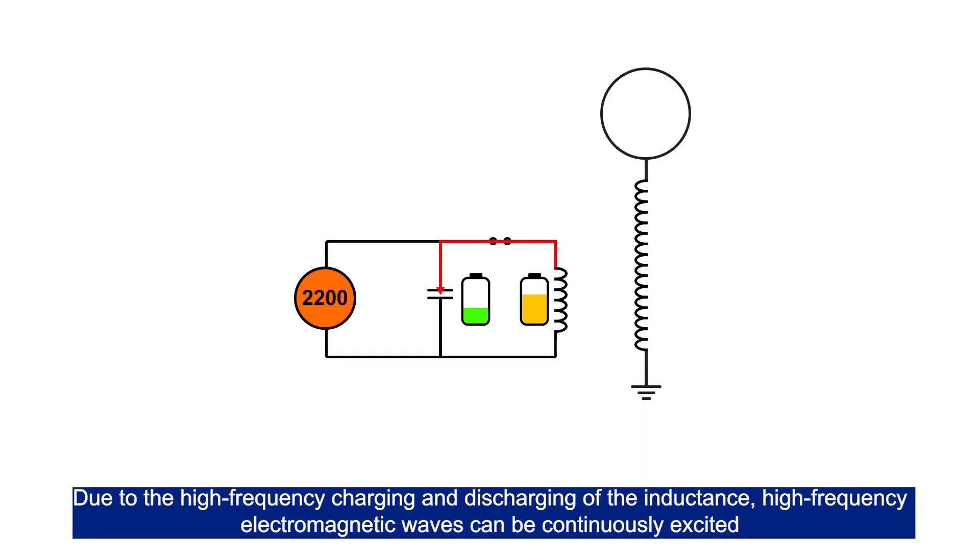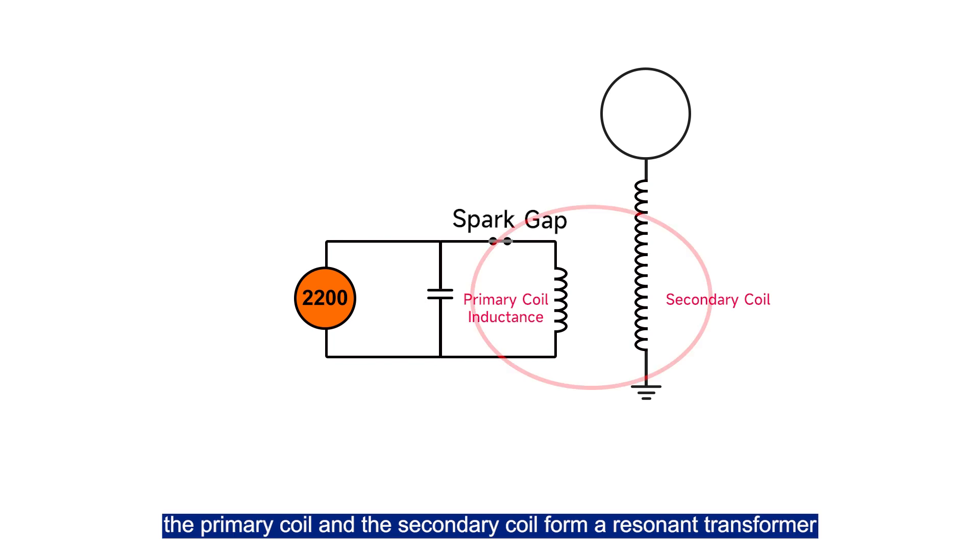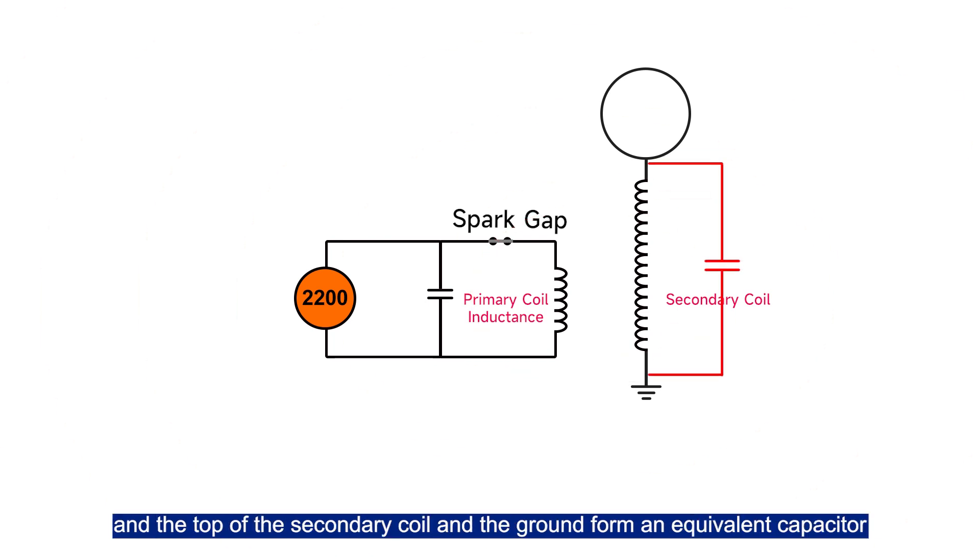Due to the high frequency charging and discharging of the inductance, high frequency electromagnetic waves will be continuously emitted. The primary coil and the secondary coil form a resonant transformer, and the top of the secondary coil and the ground form an equivalent capacitor.